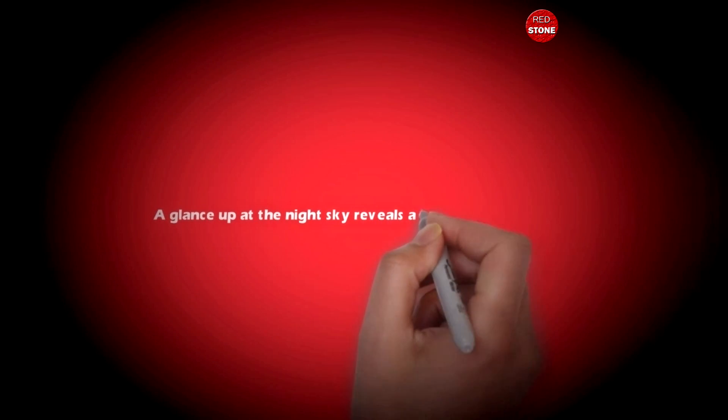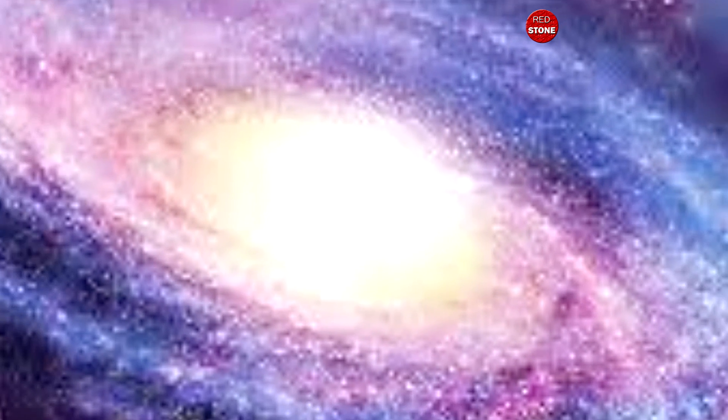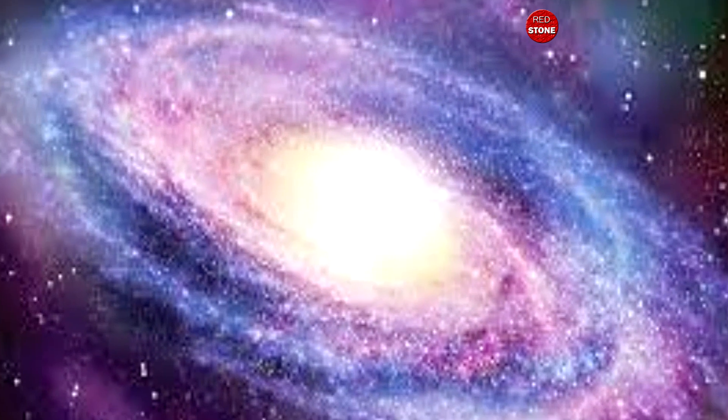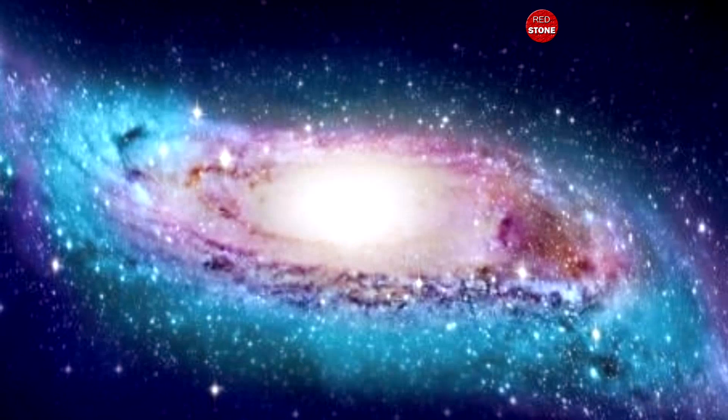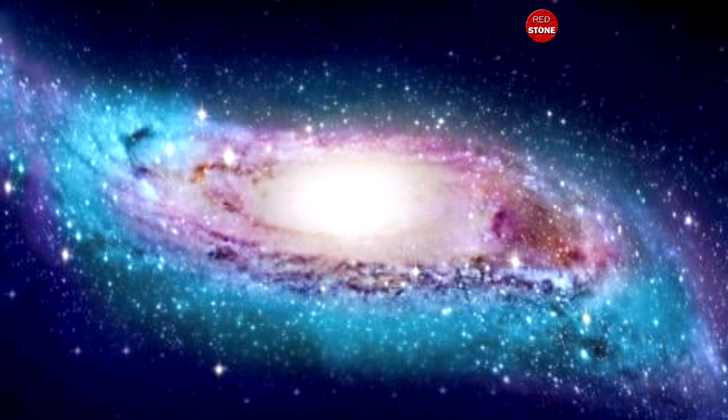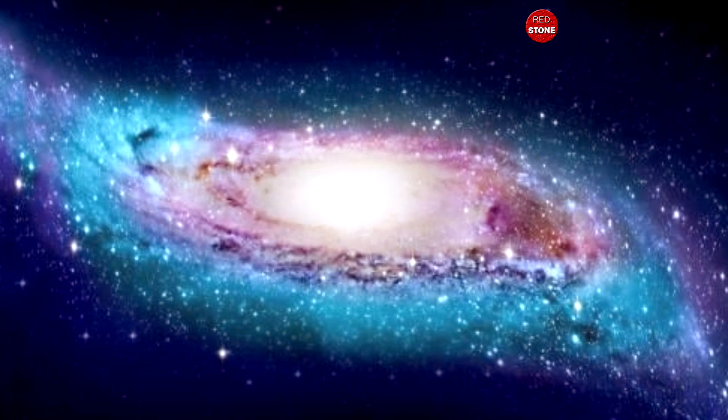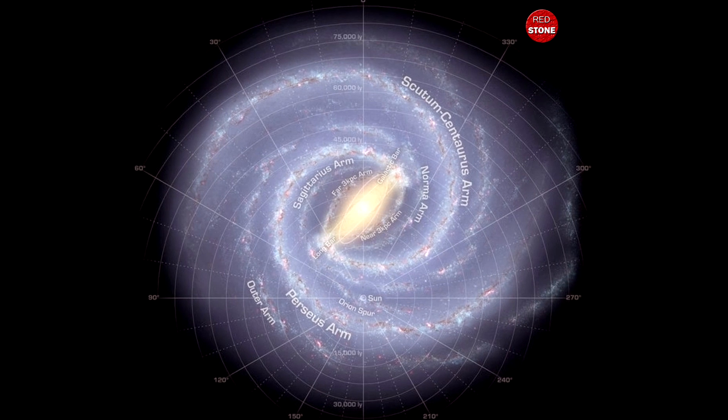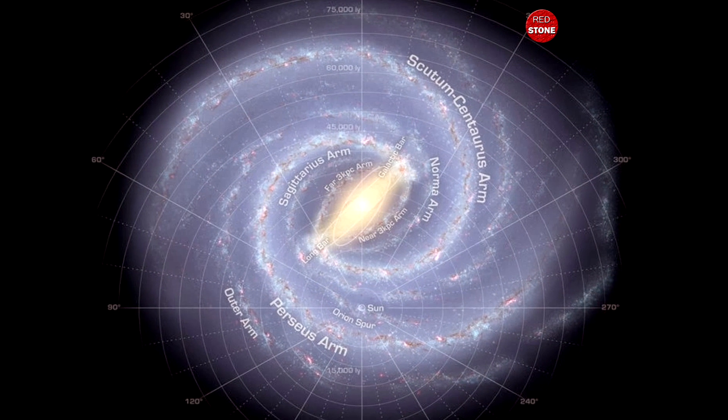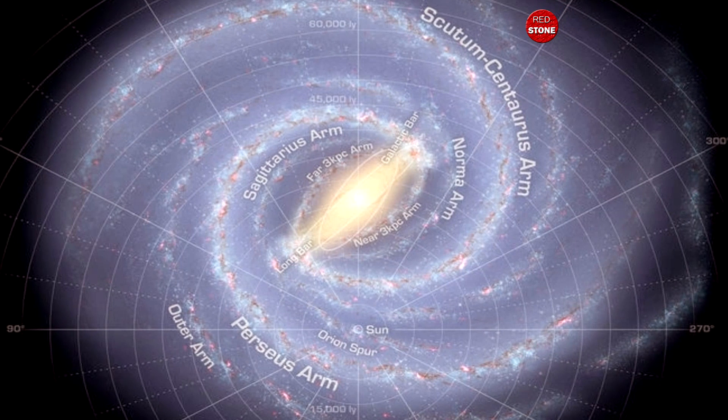9. A glance up at the night sky reveals a broad swath of light. Described by the ancients as a river, as milk, and as a path, among other things, the band has been visible in the heavens since Earth first formed. In reality, this intriguing line of light is the center of our galaxy, as seen from one of its outer arms.